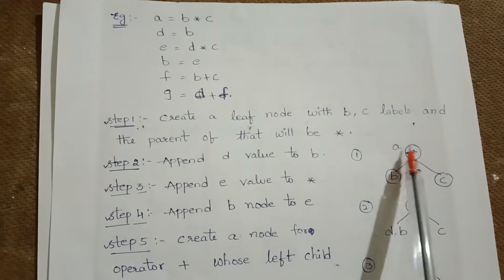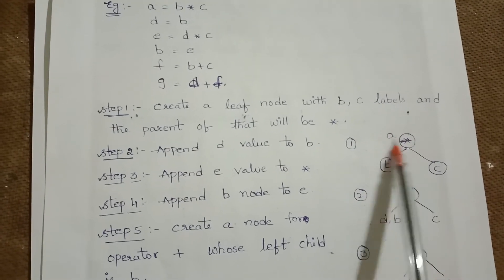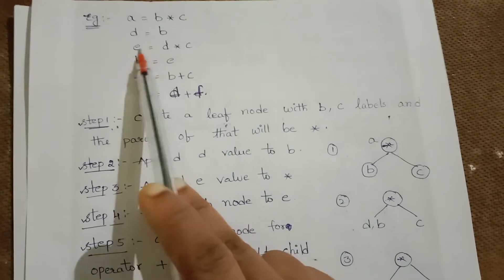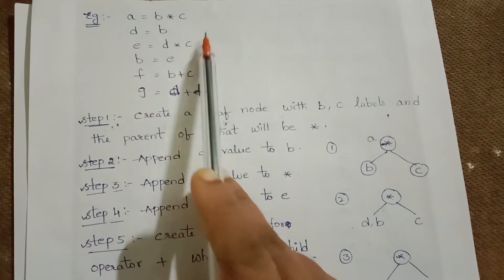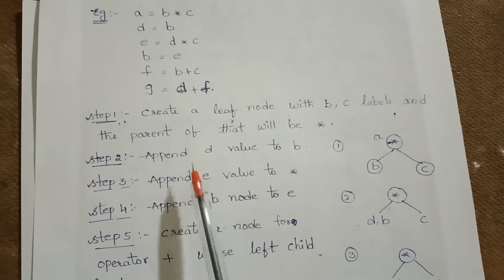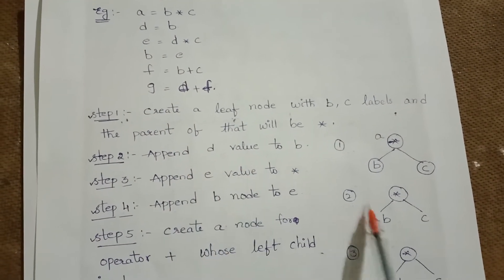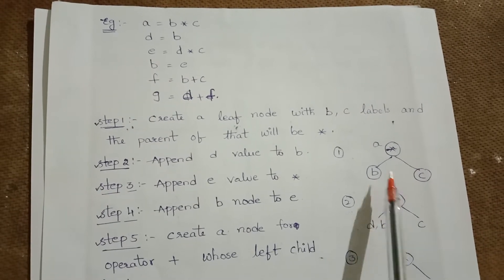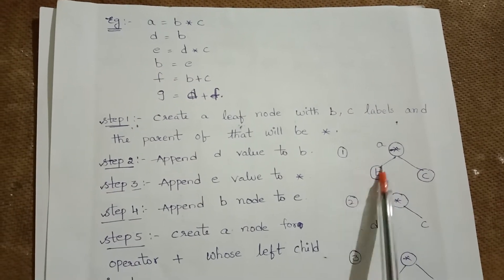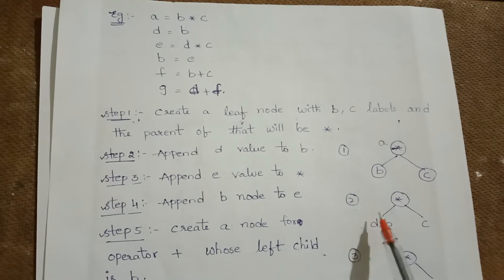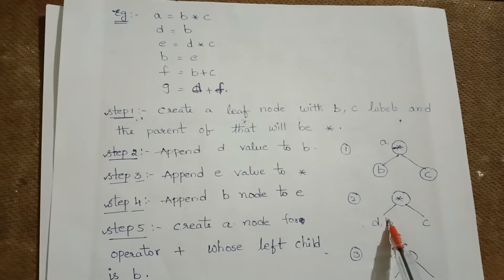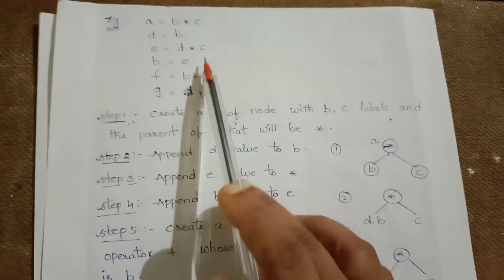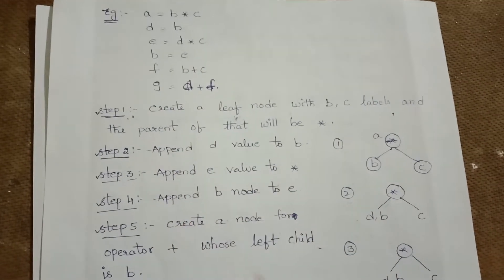In step two, we have the expression D = B. For that, append D to the node B, because D equals B and B has already been constructed. In step three, E = D * C. Since D already exists, we append the value E to the star node.